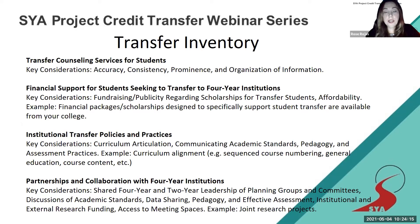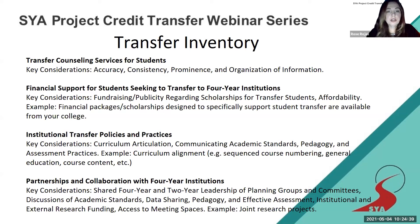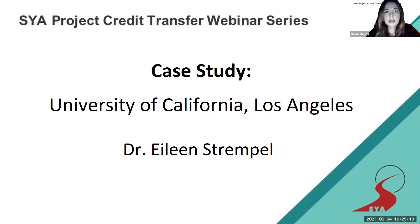Rose concludes with Maricopa's Transfer Inventory: a self-assessment tool that institutions can use with key stakeholders to examine how they are structured, what awareness exists around transfer, what perceptions are held, and how they are organized to support university transfer. It generates conversations, elevates gap areas, and helps institutions identify where improvements are needed.